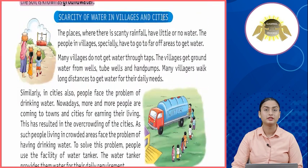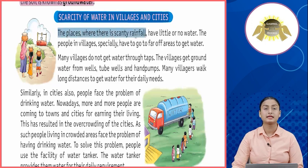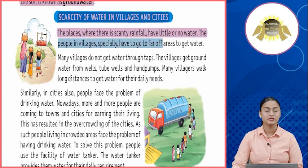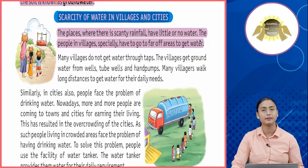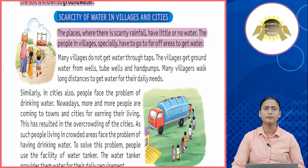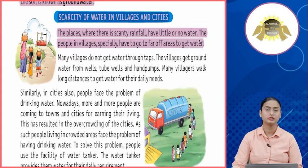Scarcity of water in villages and cities. The places where there is scanty rainfall have little or no water. The people in villages specially have to go to far off areas to get water. Scarcity yaani ki paani ki kami — toh jin jagahon pe kam barish hoti hai ya phir hoti hi nahi hai, wahaan pe paani ki kami hoti hai, wahaan ke logon ko door daraaz ja kar paani lana padta hai.